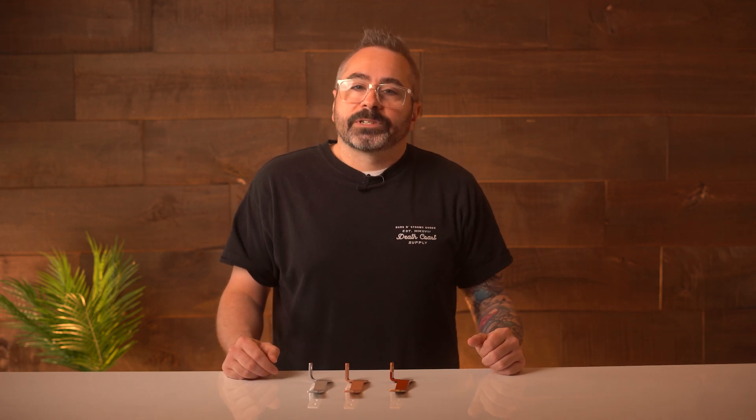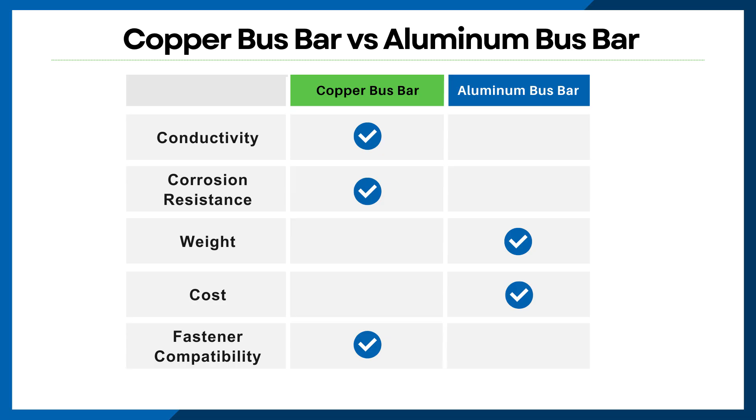When it comes to fastener compatibility, copper is more versatile and has fewer issues with galvanic corrosion, making it the superior choice. But with proper handling and compatible fasteners, aluminum can also work well too.